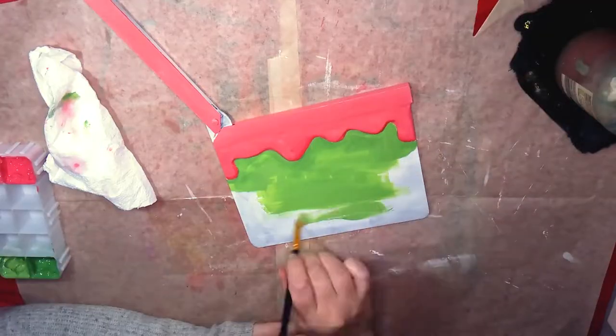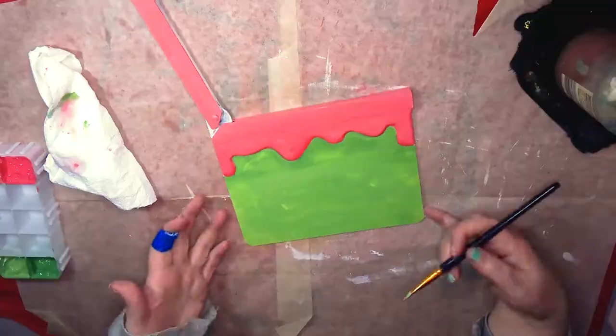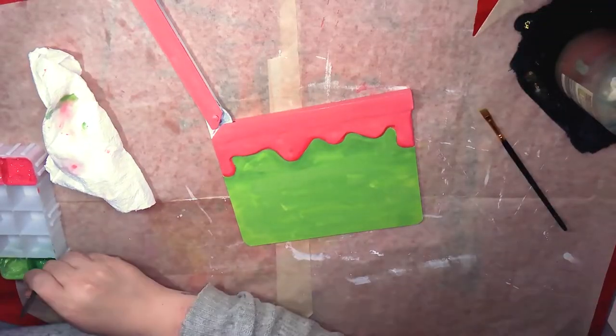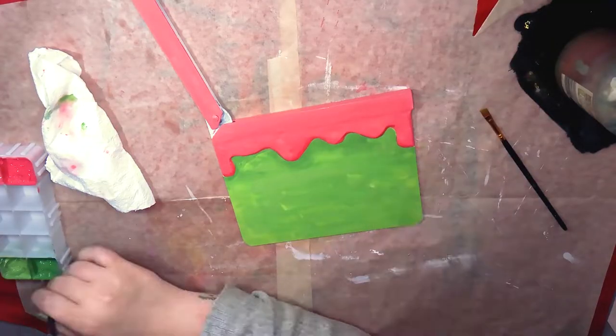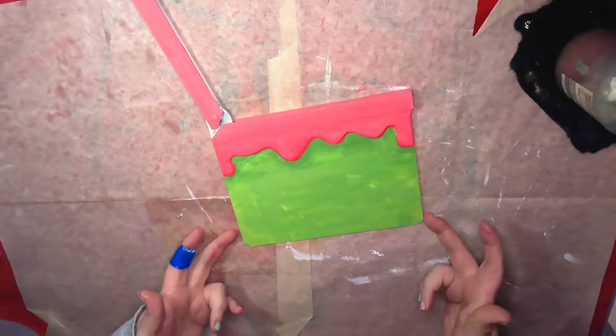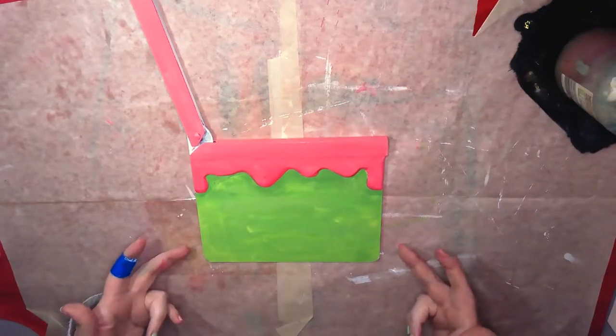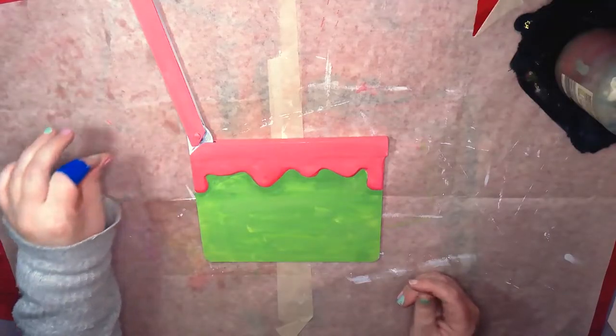And for some strange reason, the green was giving me all kinds of issues. It was just not sticking. Every time I painted on top of it, it came up all blotchy. So, don't know what the deal was there, but we can let that dry.